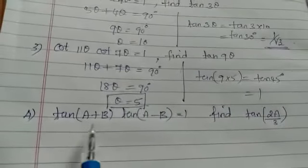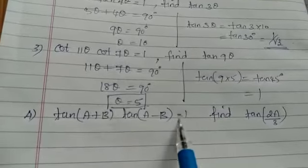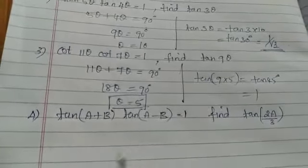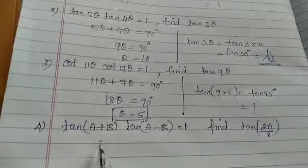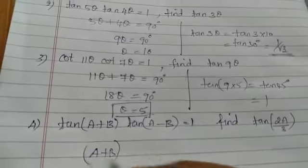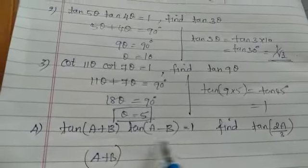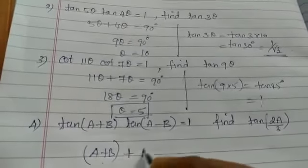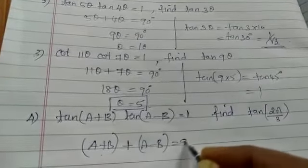tan of A plus B into tan of A minus B equal to 1. So it's the answer 1 by the multiplication, I would apply the shortcut. So what is theta 1 plus theta 2? It is 90 degree. So A plus B is theta 1 and A minus B is theta 2. So A plus B plus A minus B equal to 90 degree.